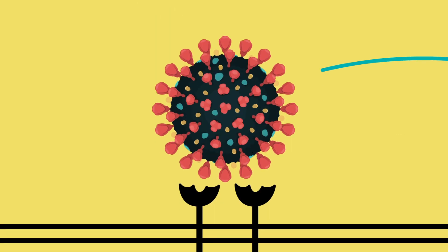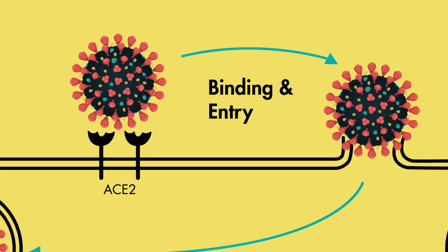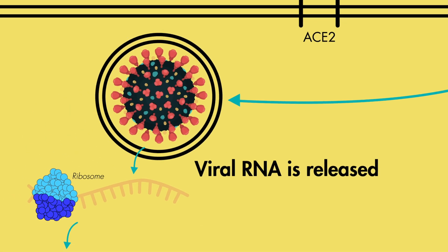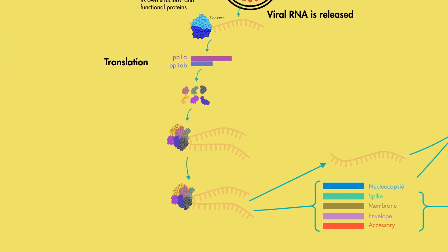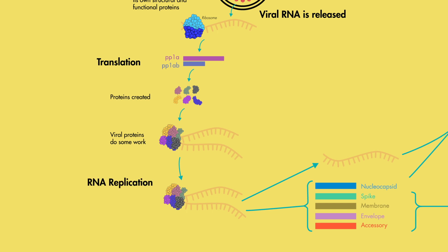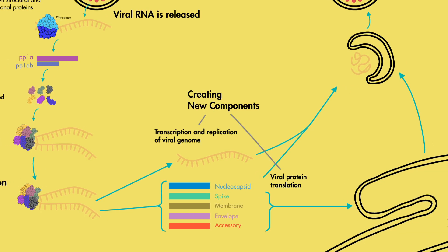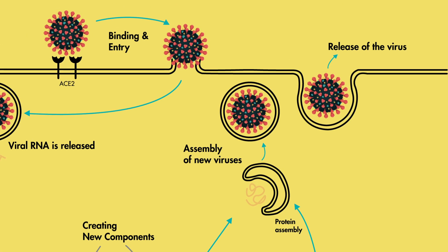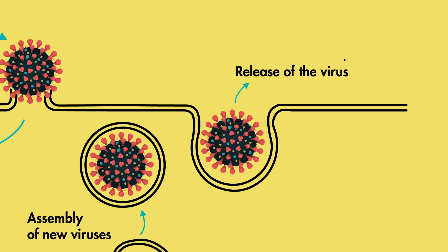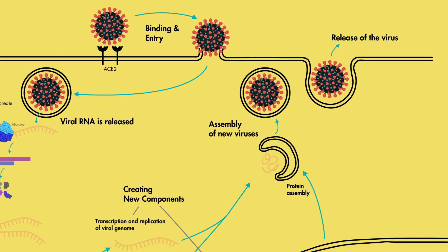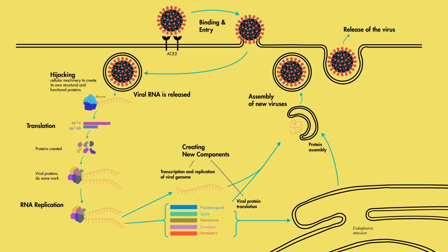When the virus finds these ACE2 receptors, it binds to them and gains entry into these cells. And once inside our cells, viral RNA is released and hijacks our own cellular machinery to create its own structural and functional proteins, which then proceed to translate and replicate its own genetic material to make more copies of itself. The virus is then released from the host cells and goes on to infect more and more human cells, with the cycle continuing until our immune system tries to fight and stop the virus.